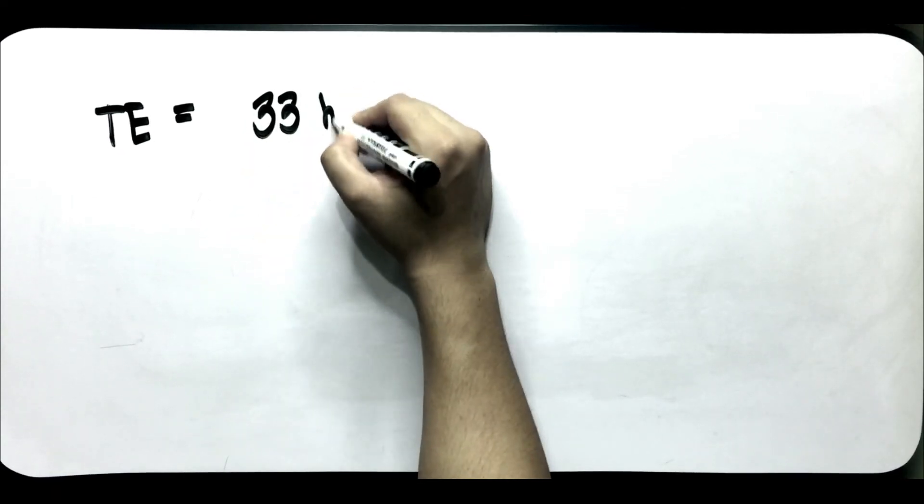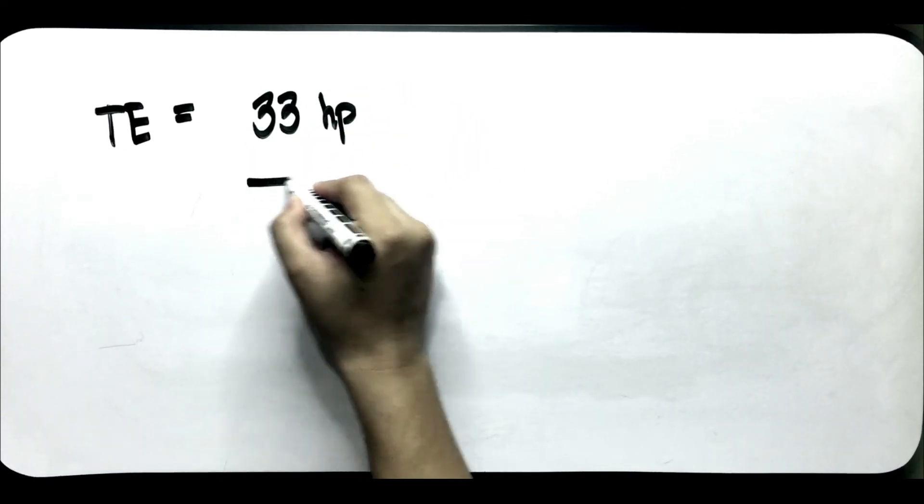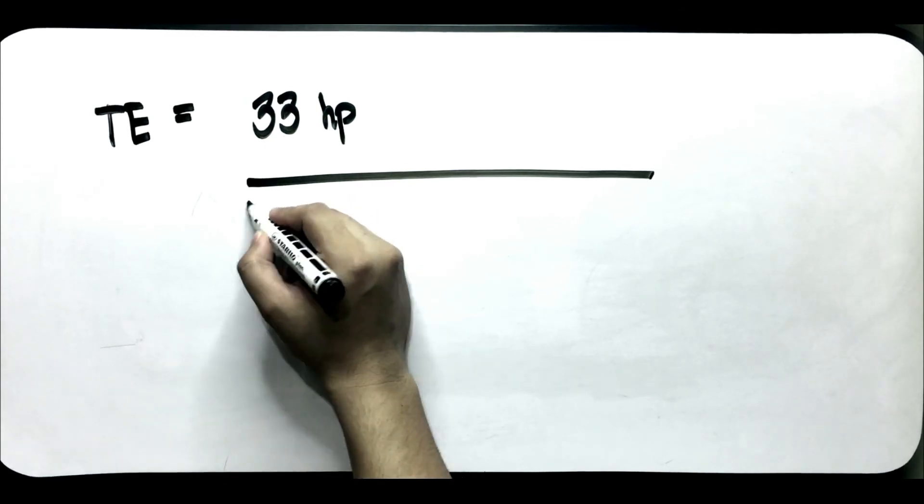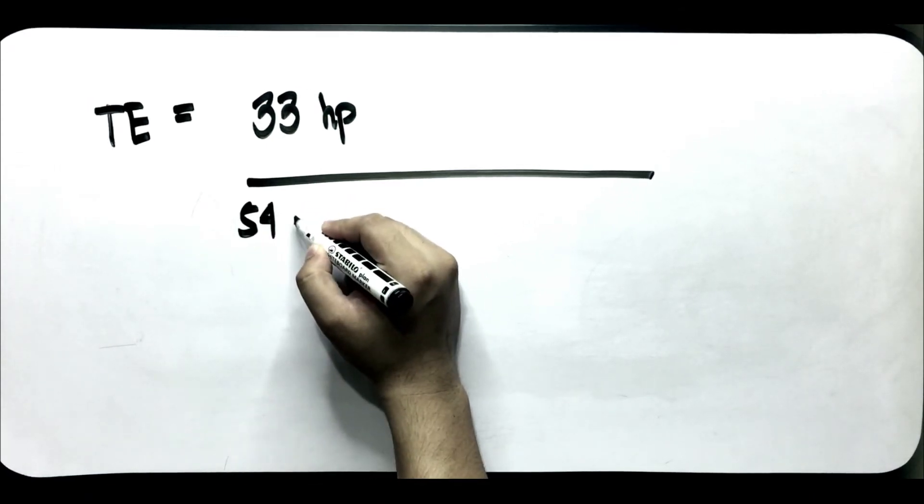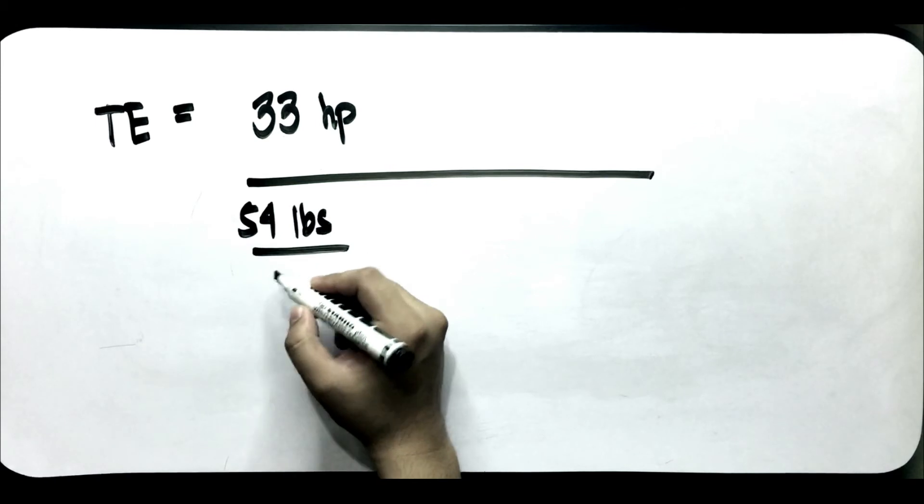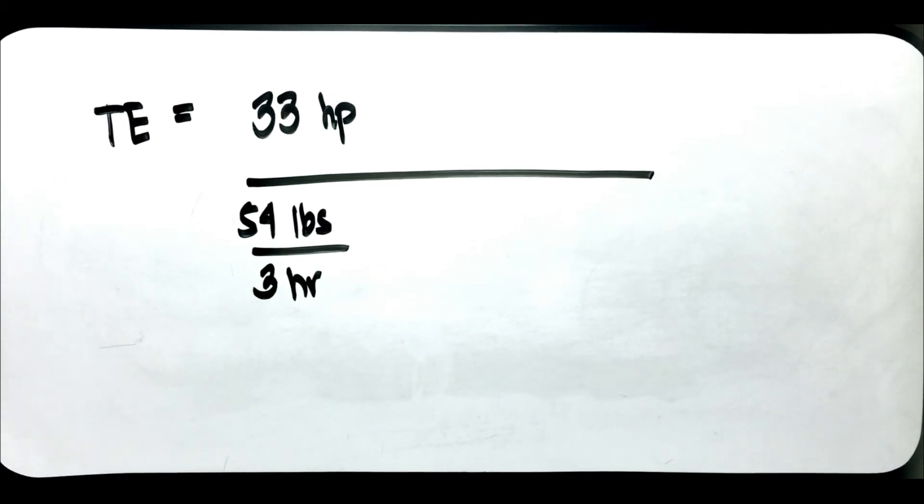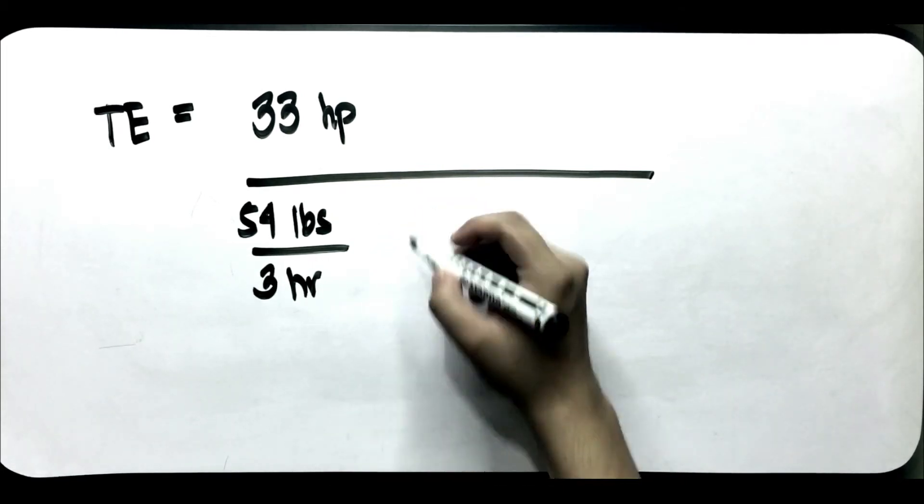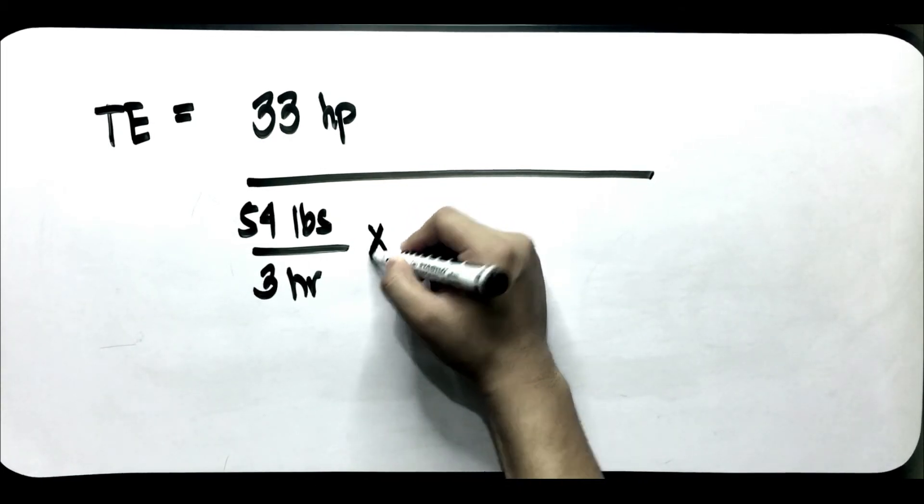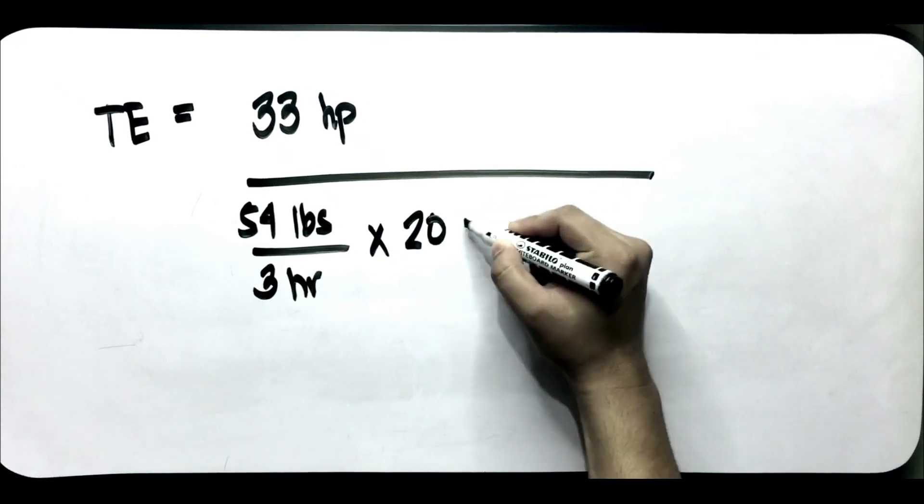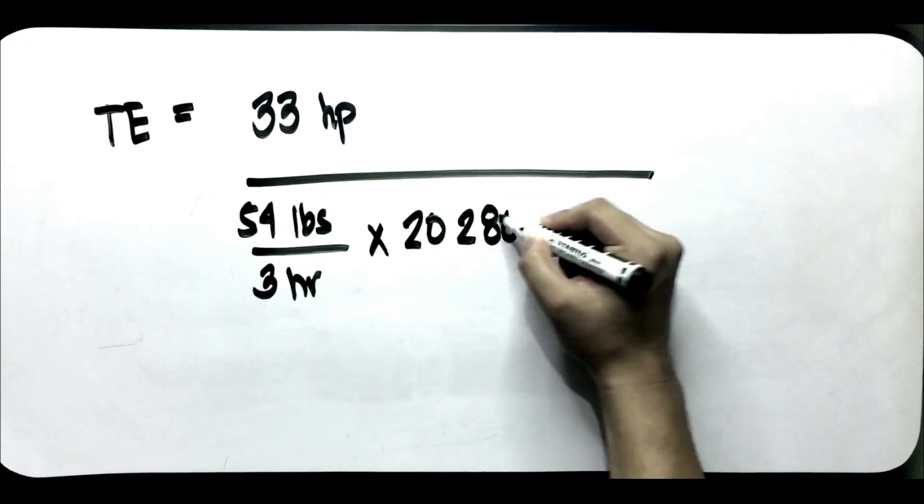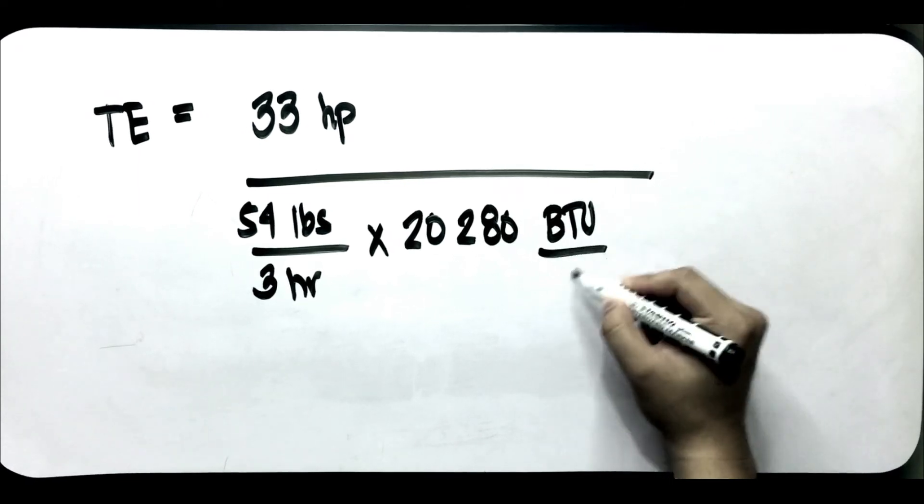Since given na yung power developed, yun yung ilalagay natin dito, 33 HP. Times yung kanyang fuel consumption na 54 pounds sa loob ng tatlong oras. Ang next na kailangan natin is yung heating value or calorific value ng gasoline. Sa table, meron doon na regular gasoline which is 20,280 BTU per pound.